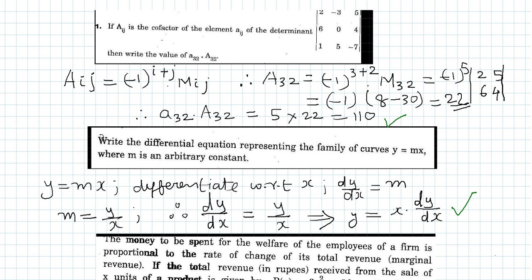Now let us look at problem number 2. Given the family of curves y = Mx, we have to write the differential equation. The given equation is y = Mx and we have only one arbitrary constant here, which is M. To get the differential equation with only one arbitrary constant, we have to differentiate the function with respect to x only once. Differentiating y with respect to x, we get dy/dx = M.